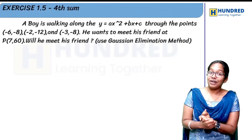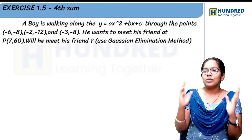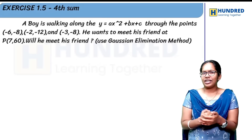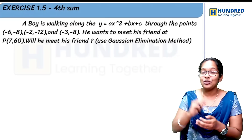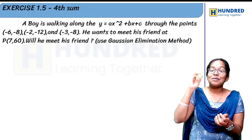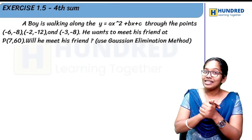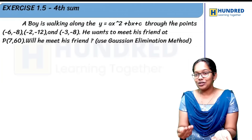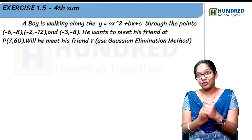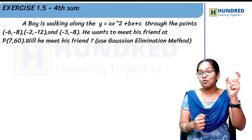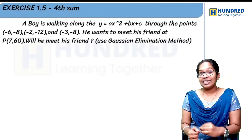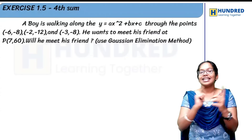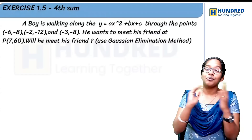And then in Exercise 1.5, the fourth sum is again an application-oriented sum. In these mostly application-oriented sums, you will be framing equations. Substitute 3 points to find 3 equations. Using Gauss elimination method, we will solve this question. So this question is very important.